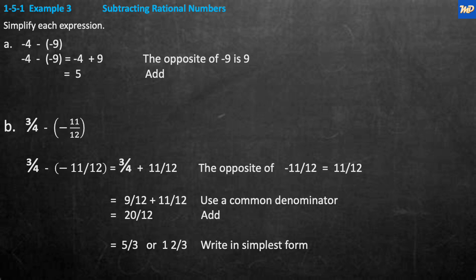Example 3, subtracting rational numbers. We'll skip number lines and tile models and do the math directly. Problem A: negative 4 minus negative 9. Rewrite it: negative 4 plus the opposite of negative 9, which is positive 9. Negative times a negative is a positive. So now it's negative 4 plus 9, which equals 5.